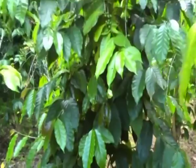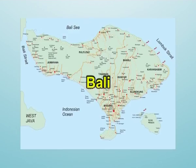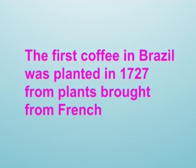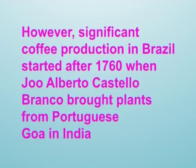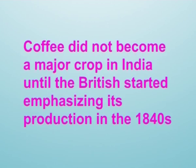The Dutch took the lead in propagating coffee in their colonies of Java, Sumatra, and Bali. The first coffee in Brazil was planted in 1727 from plants brought from France. However, significant coffee production in Brazil started after 1760 when Gil Alberto Castillo Branco brought coffee plants from Portuguese Goa in India. Similarly, coffee plantation was introduced in Cuba by Don Francisco in 1779. Coffee did not become a major crop in India until the British started emphasizing its production in the 1840s.